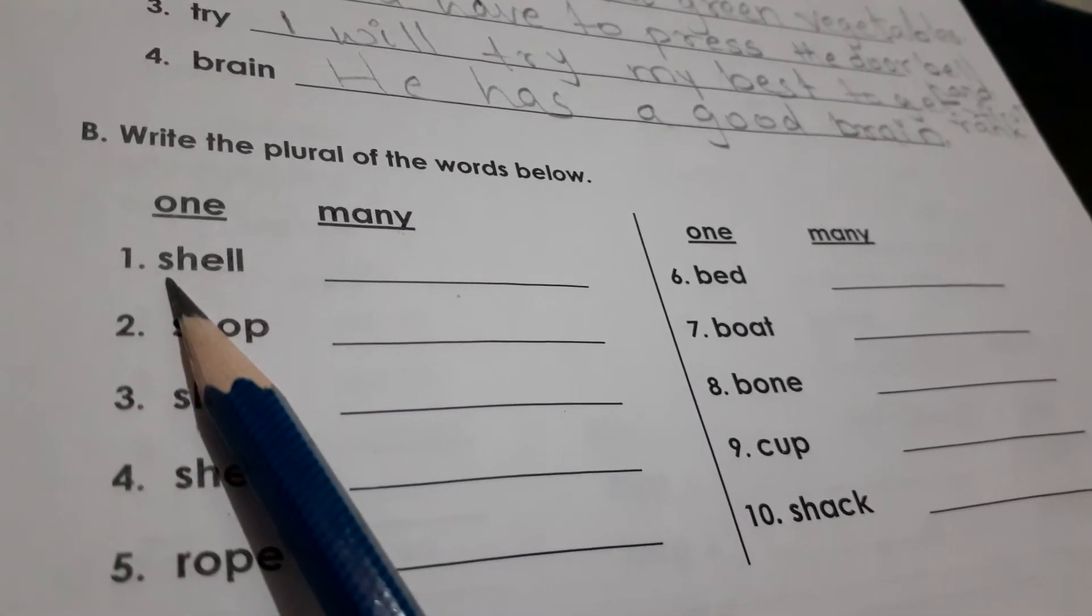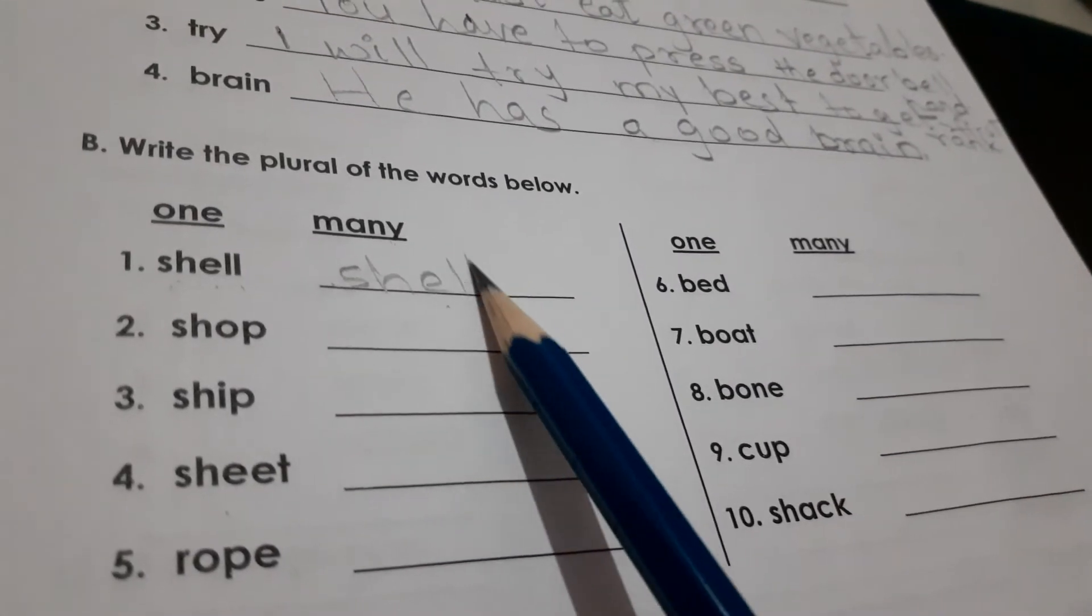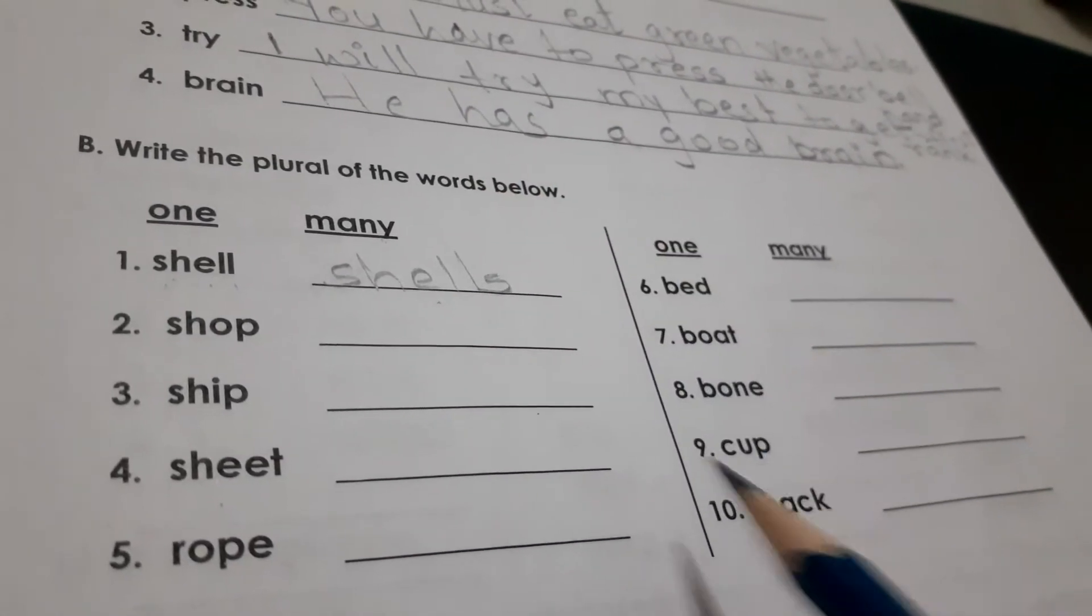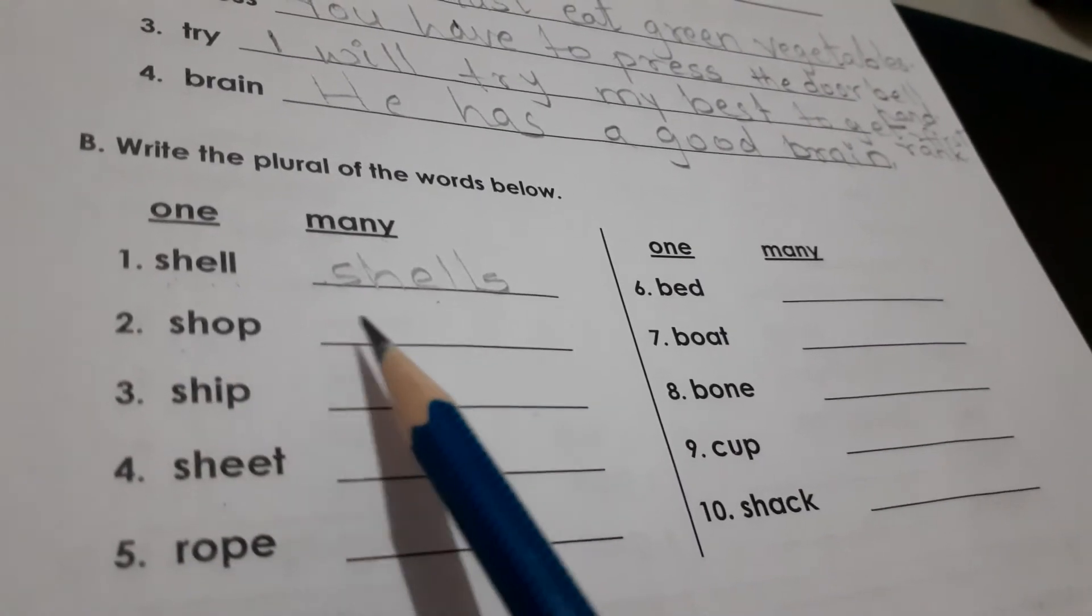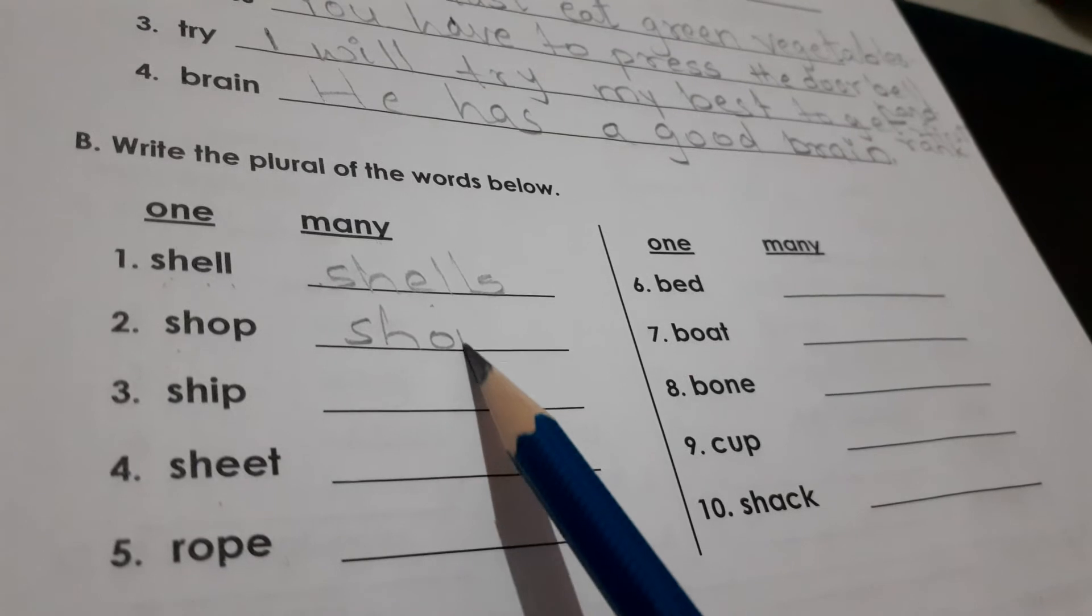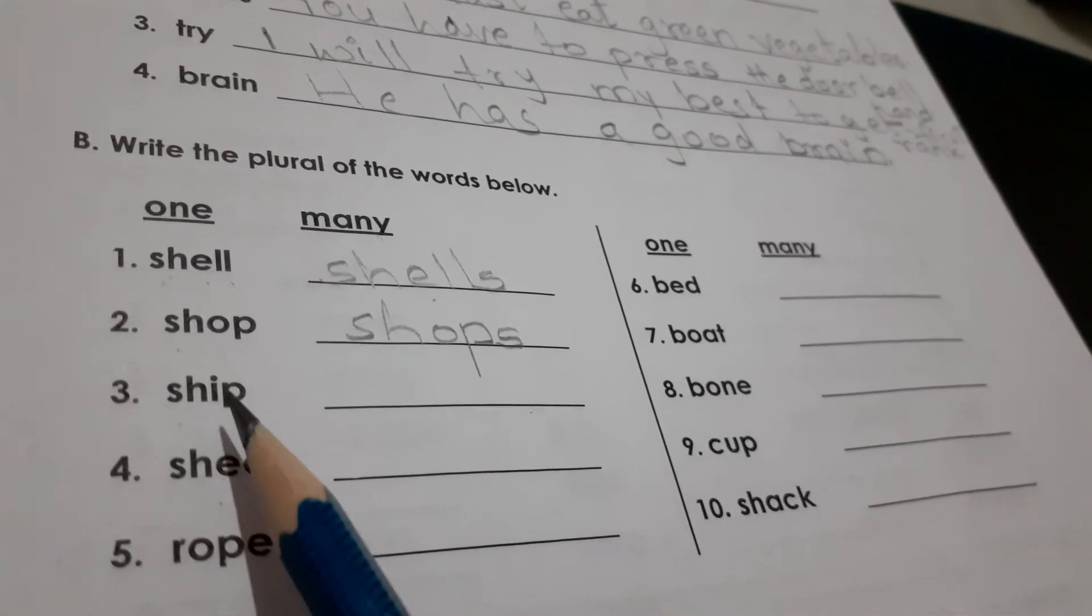Now, we will read Shell. So, same to same and add S. Shells. Shell, shells. Shop. One vowel. Shop, shops.